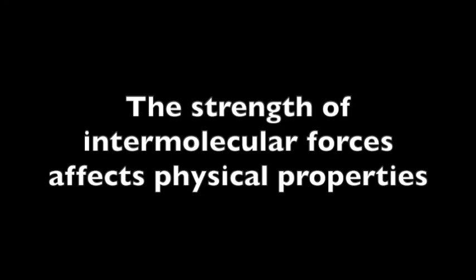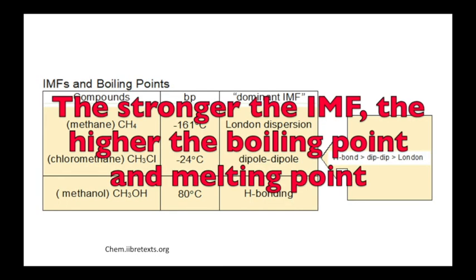In summary, the strength of intermolecular forces can affect physical properties. The stronger the intermolecular forces are, the higher the boiling point and melting point are. The heat of fusion and the heat of vaporization are also higher in substances with strong intermolecular forces, because it takes more energy to change the substance from a solid to a liquid or from a liquid to a gas.